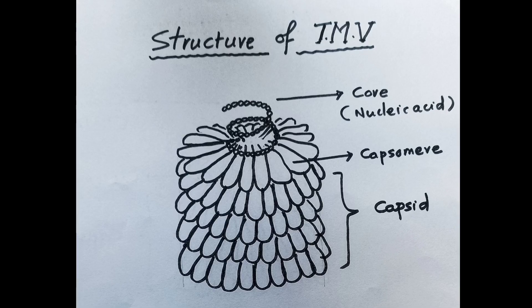Dear students, very good morning all. Today I am going to explain how to draw the structure of TMB and give a brief explanation of its structure. TMB means Tobacco Mosaic Virus, the virus which causes diseases in tobacco plants.